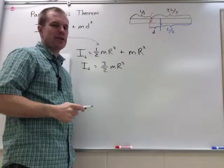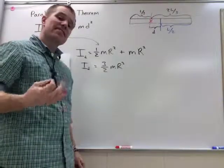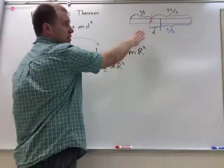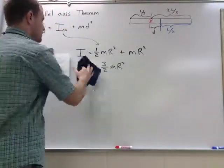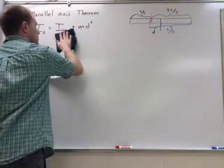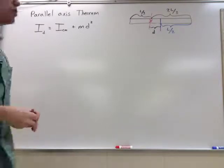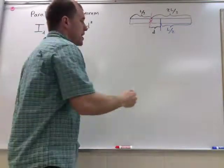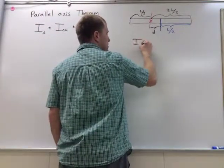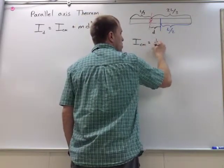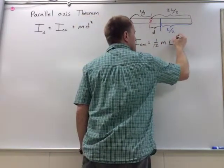A lot easier than a two-dimensional integral. Now let's see if this also works for our linear rod. Looking at my chart, I know that the center of mass moment of inertia is equal to one-twelfth m l squared.